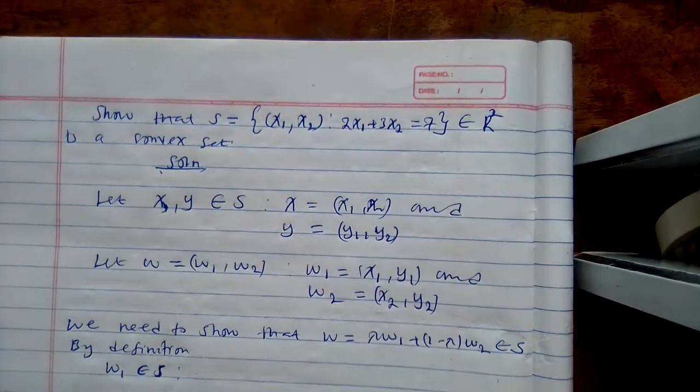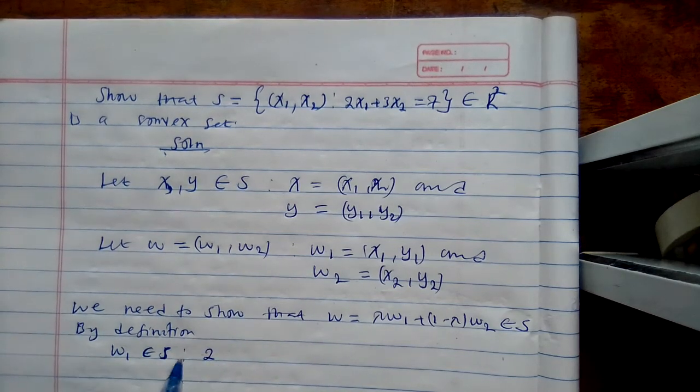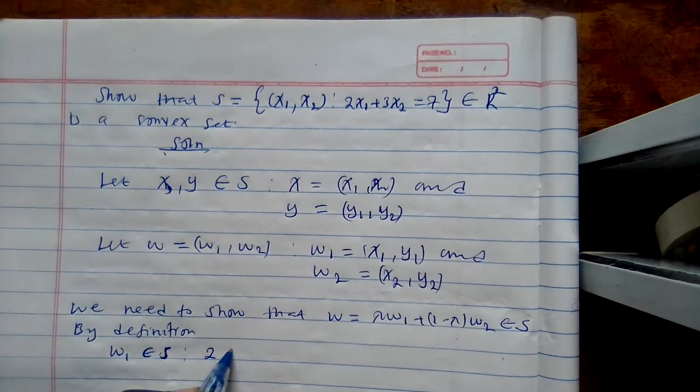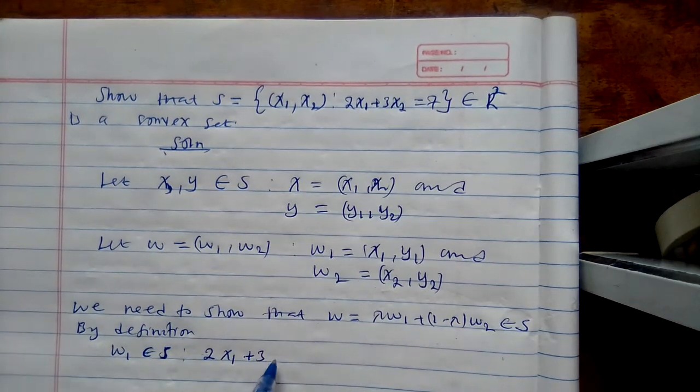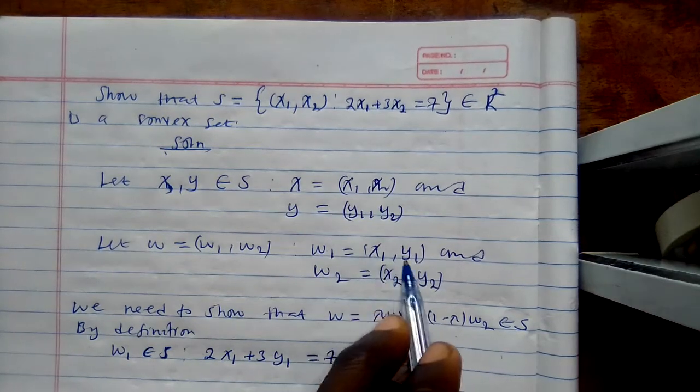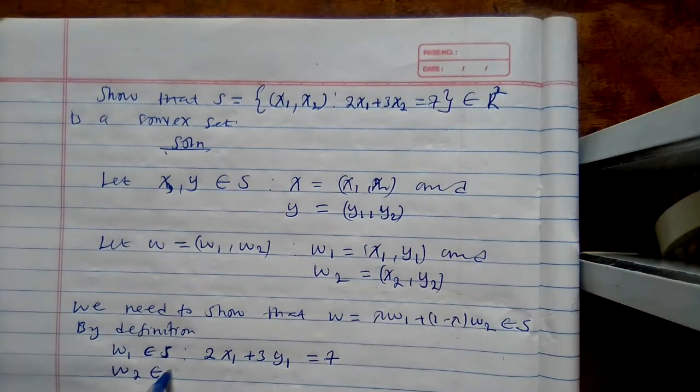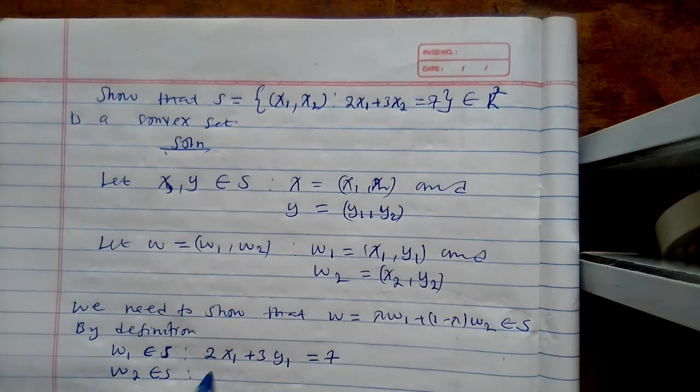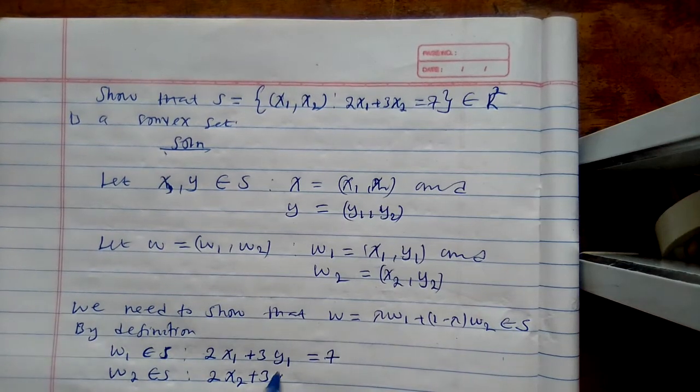Then 2X1 plus 3Y1 is equal to 7. I'm substituting. Also, if W2 is in S, then 2X2 plus 3Y2 is equal to 7.